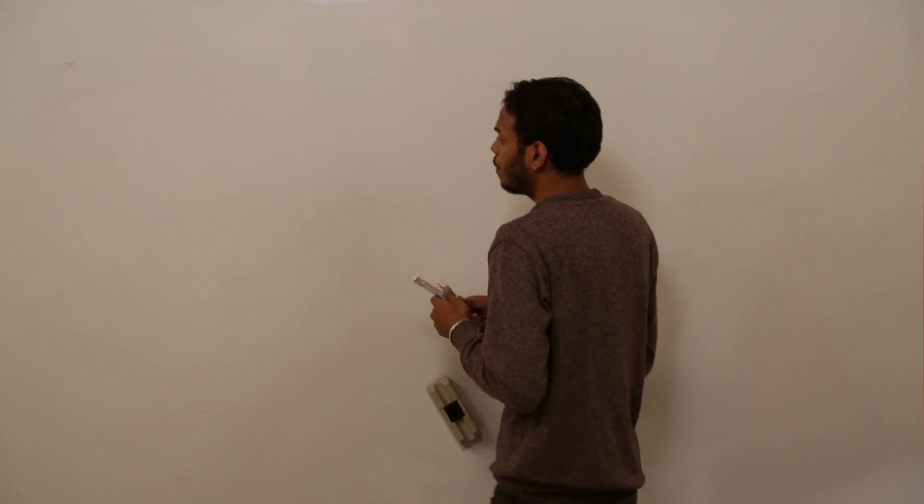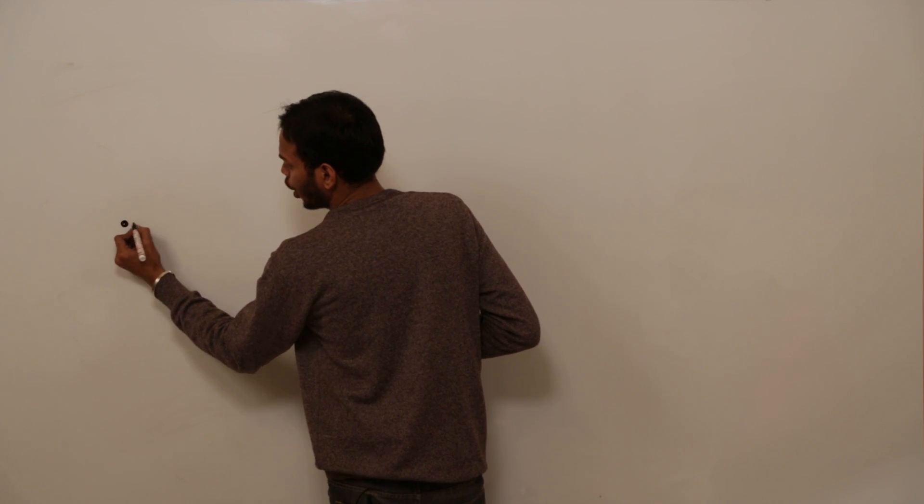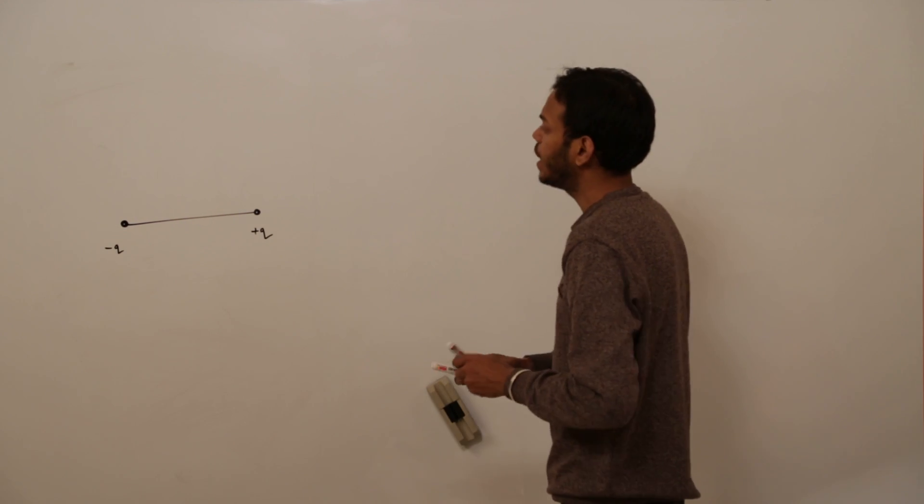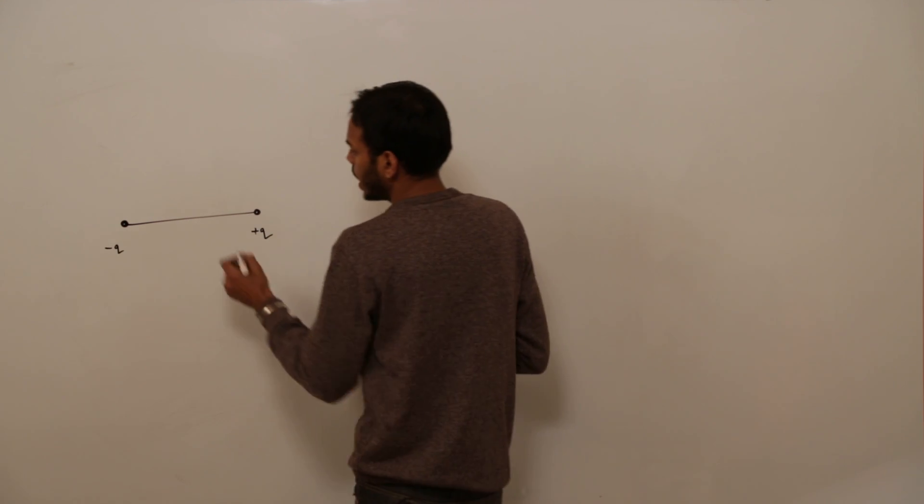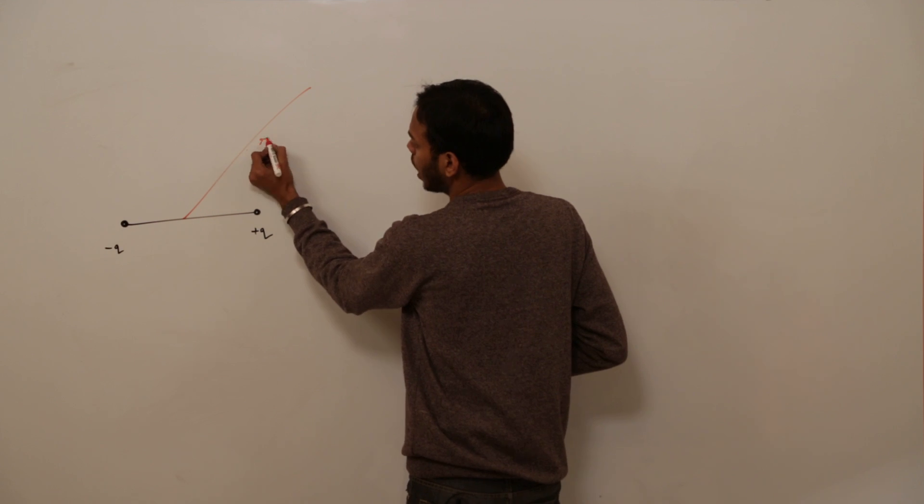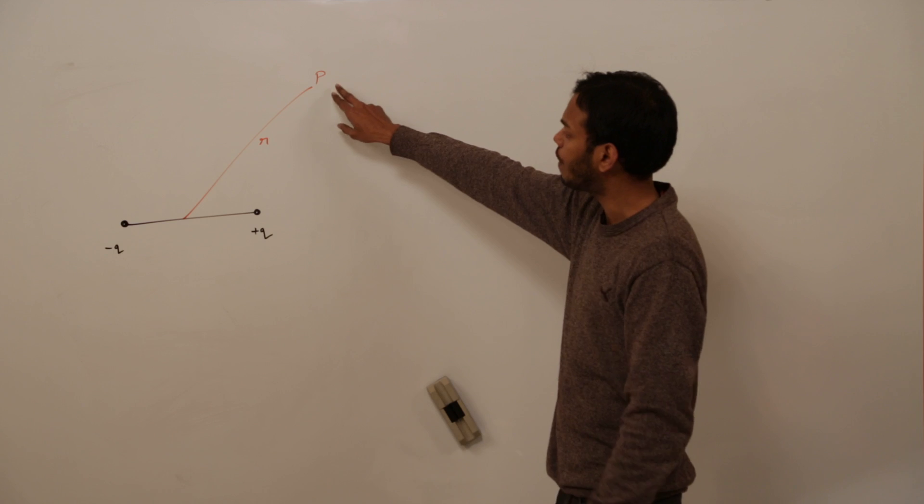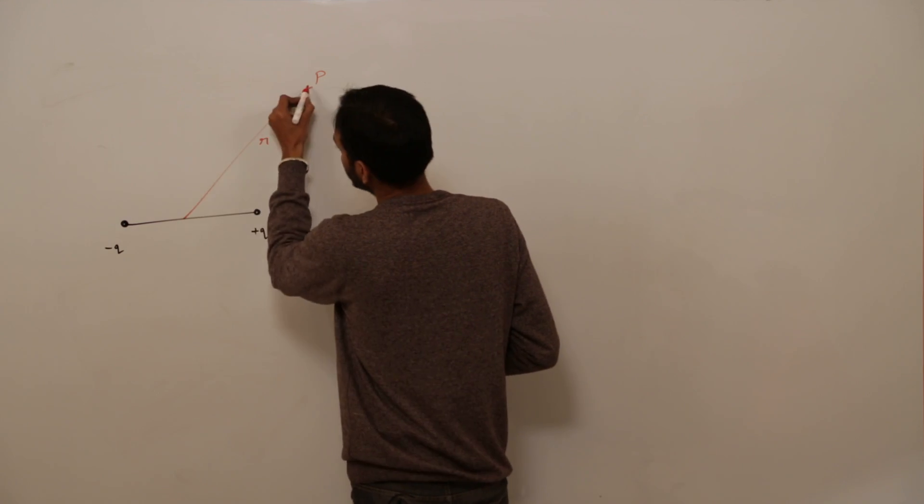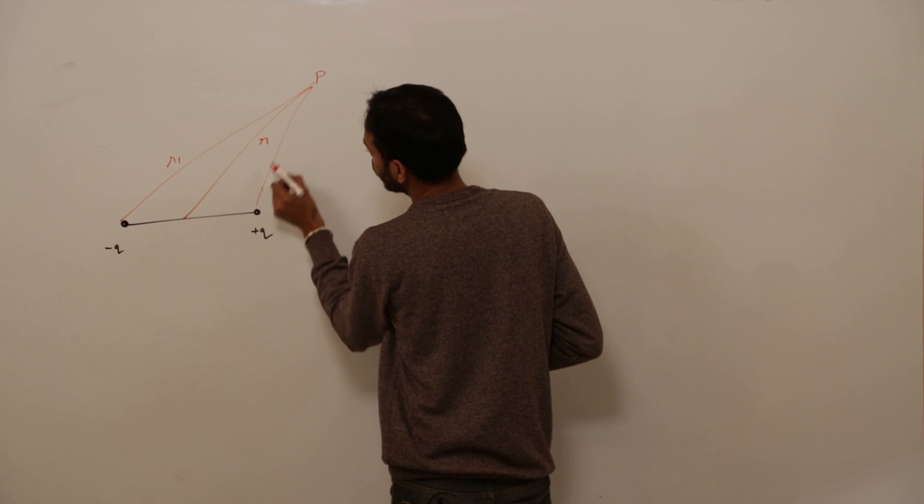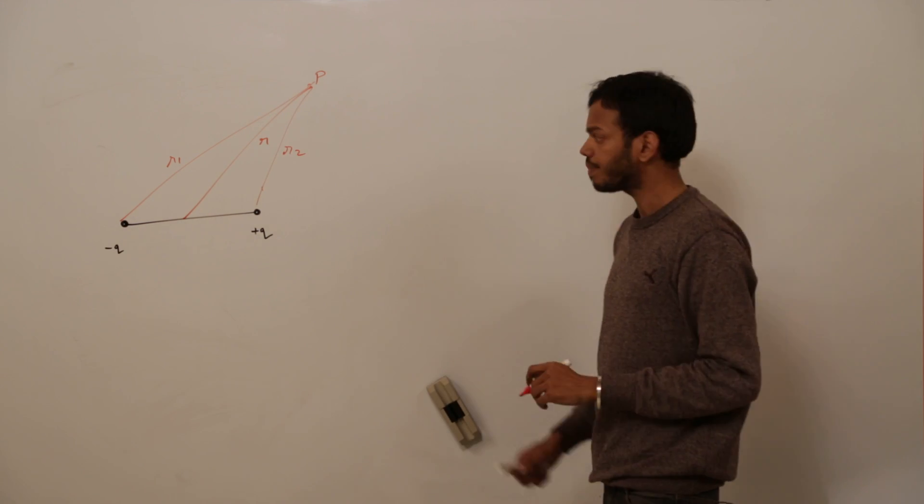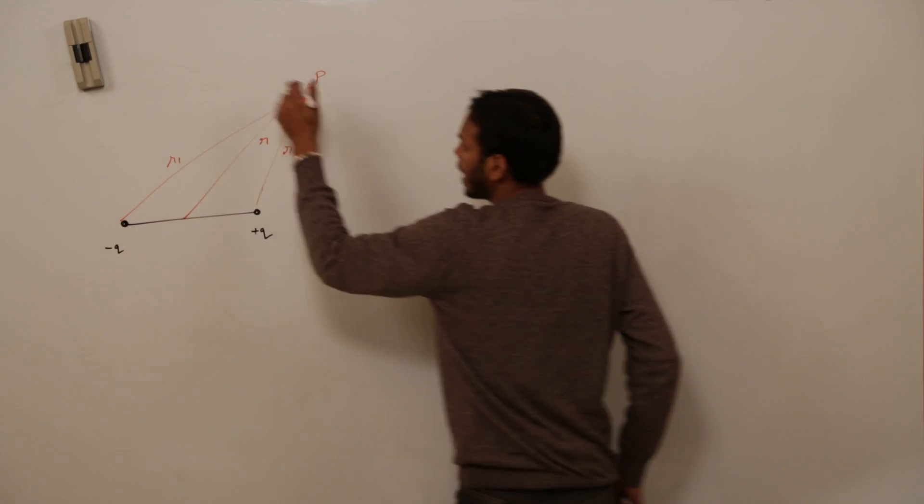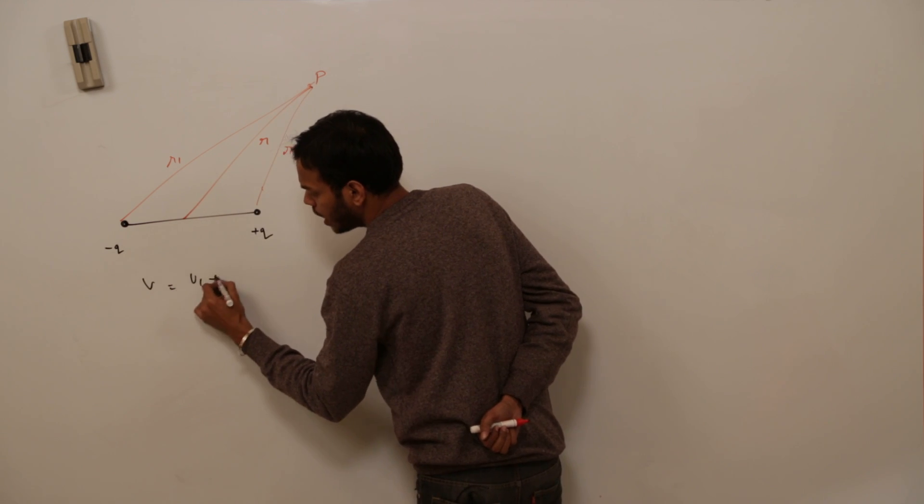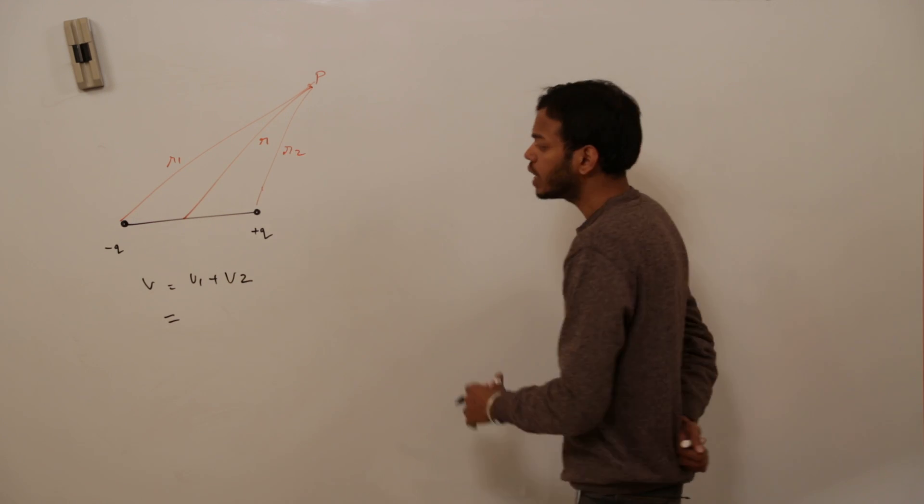Moving on to find the value of electric potential at any point due to a dipole. Minus Q plus Q. There is a very smart way to do this equation. Consider the distance from center of the dipole to be R. Let us say this is the point P where I have to find the value of potential. What are the distance from minus Q to P? Consider it to be R1 and let this to be R2. We will start with a very simple equation that is electric potential at P due to these two charges and this would be V1 plus V2. What is the value of V1 for this?